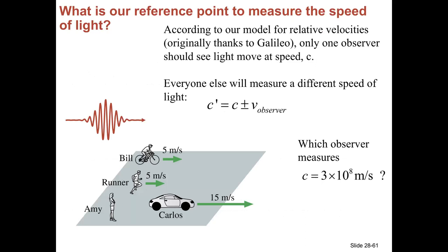This leads into the ambiguity: the speed of light is 300 million meters per second, but who's measuring that? Or, more scientifically, relative to what? Is it someone on the sun, on the ground, in a car? This idea of relative velocities was originally developed by Galileo hundreds of years ago, so it's not something new in physics.